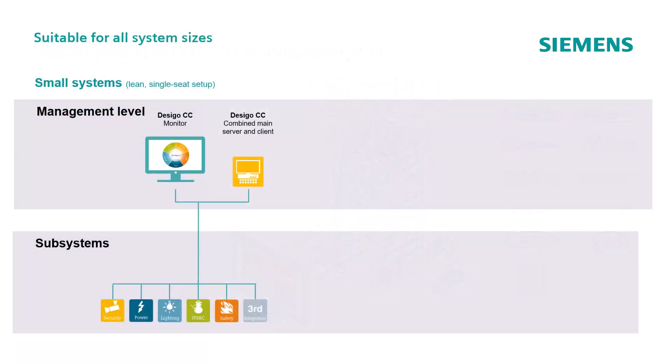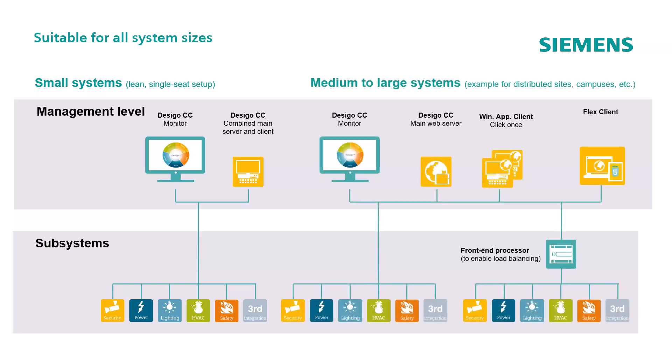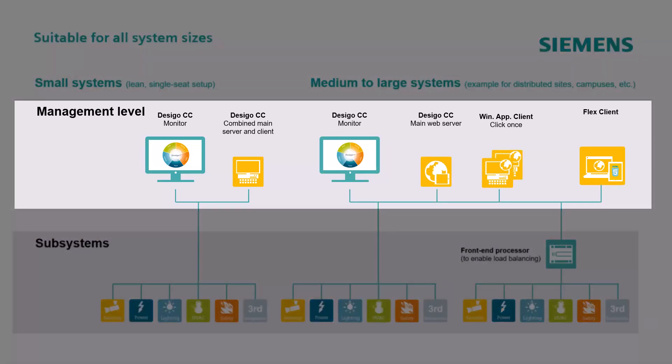Dizigo CC is a flexible, full client-server architecture allowing scalability from small and medium to large and complex systems. Dizigo CC's user interface provides effective system operation and control. It presents well-arranged, relevant information to the user and is ready for interaction without any overlapping windows. In addition, the user interface combines daily operation and event handling.